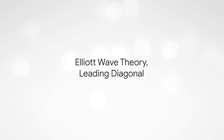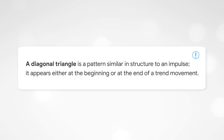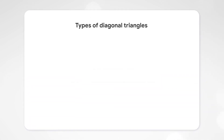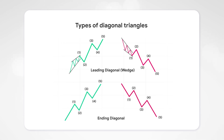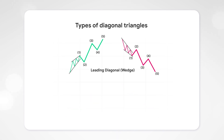Lesson 8.2 - Elliott Wave Theory: Leading Diagonal. A diagonal triangle is a pattern similar in structure to an impulse. It appears either at the beginning or at the end of the trend movement. There are two types of diagonal triangles: the leading diagonal triangle, which is formed only at the beginning of the trend, and the ending diagonal triangle, which is formed before the end of the trend. In this lesson, we will look at the leading diagonal triangle.